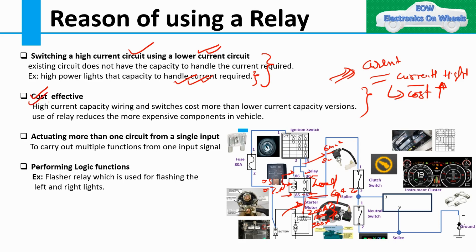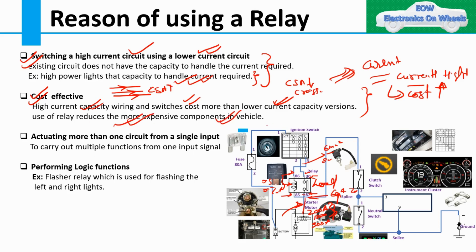So the answer is yes and no both — but you have to understand when you select yes and when you select no. The second reason for using the relay is cost effectiveness. When high current capacity wiring and switches cost more than lower current capacity ones — if you are passing high current through a wire, you have to take a larger wire cross-sectional area (CSA). If you use lower current capacity, your CSA will also be lower. Use of relay reduces the need for more expensive components in the vehicle.